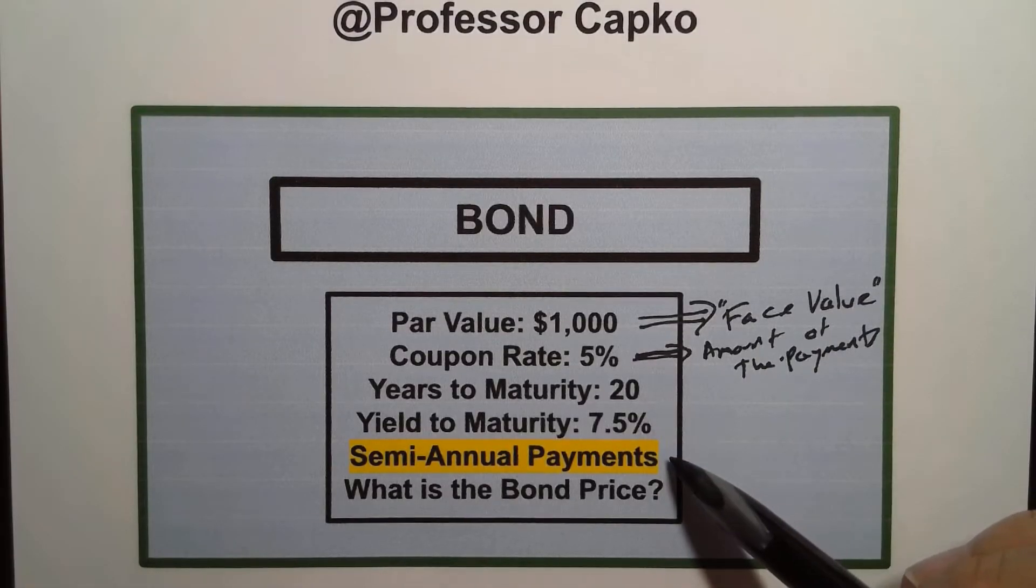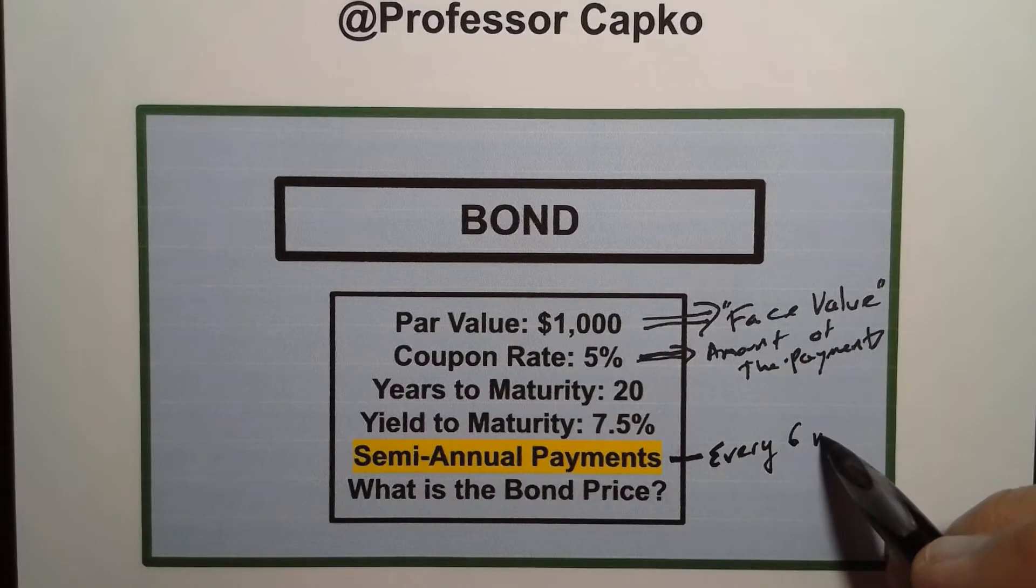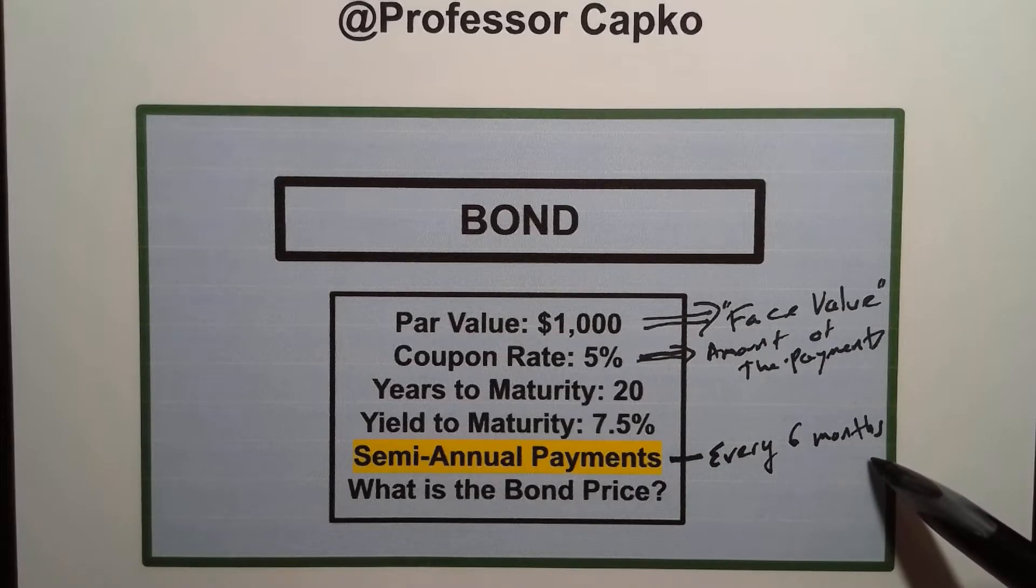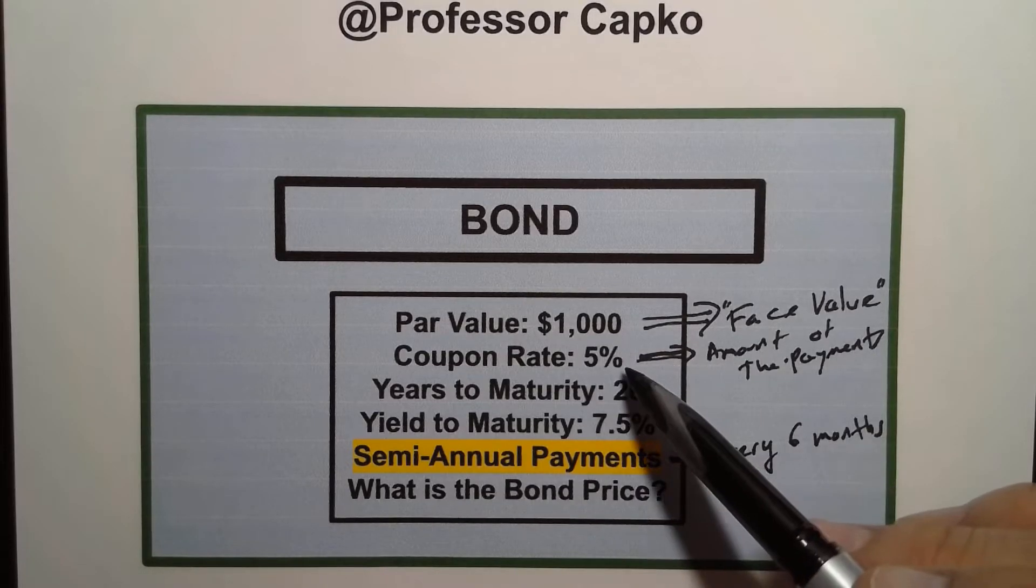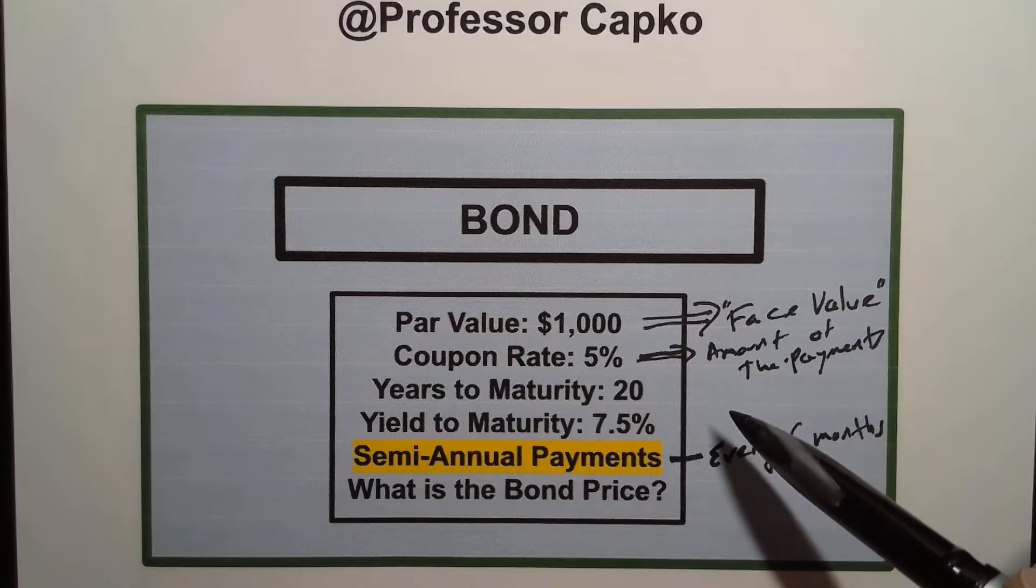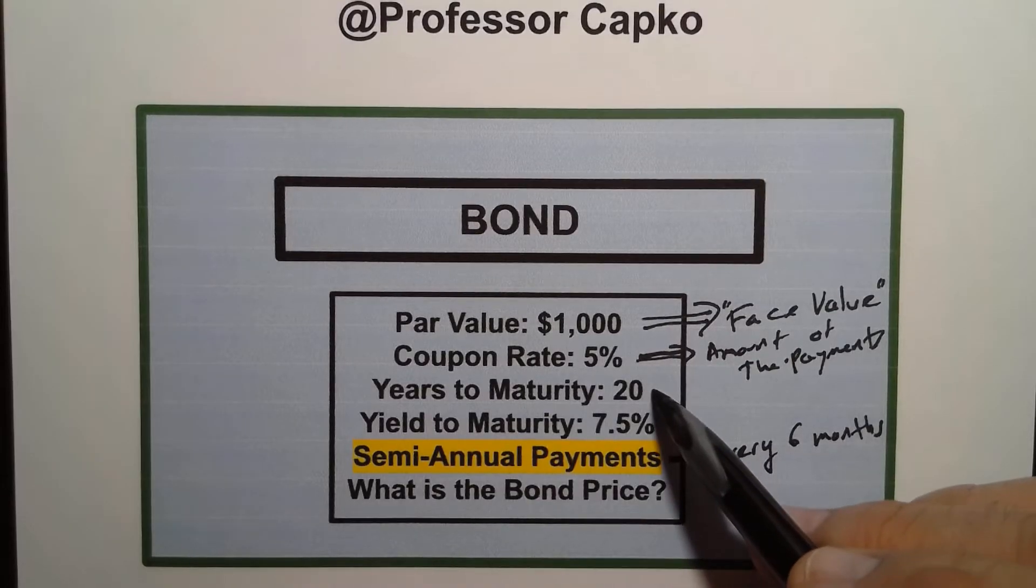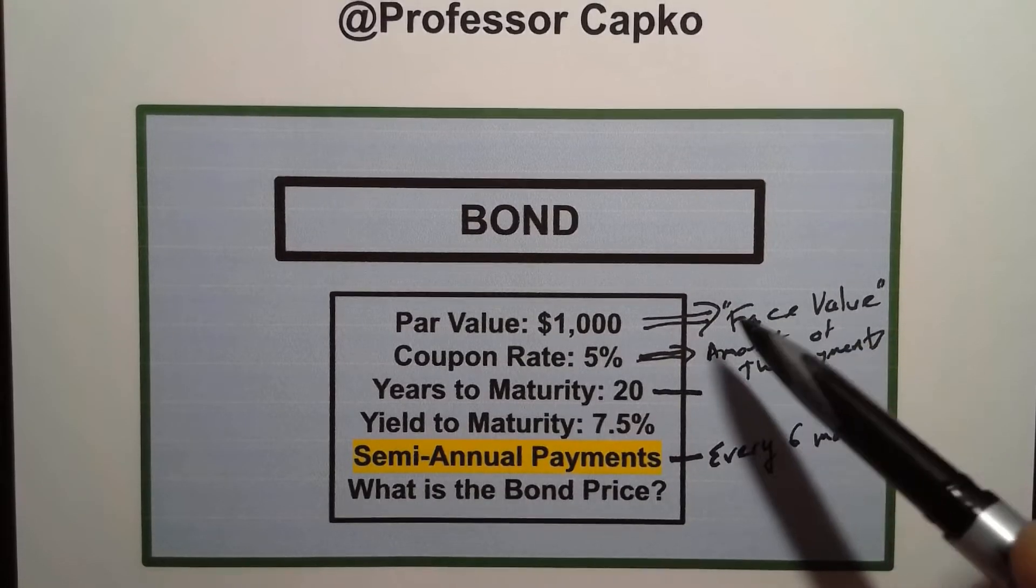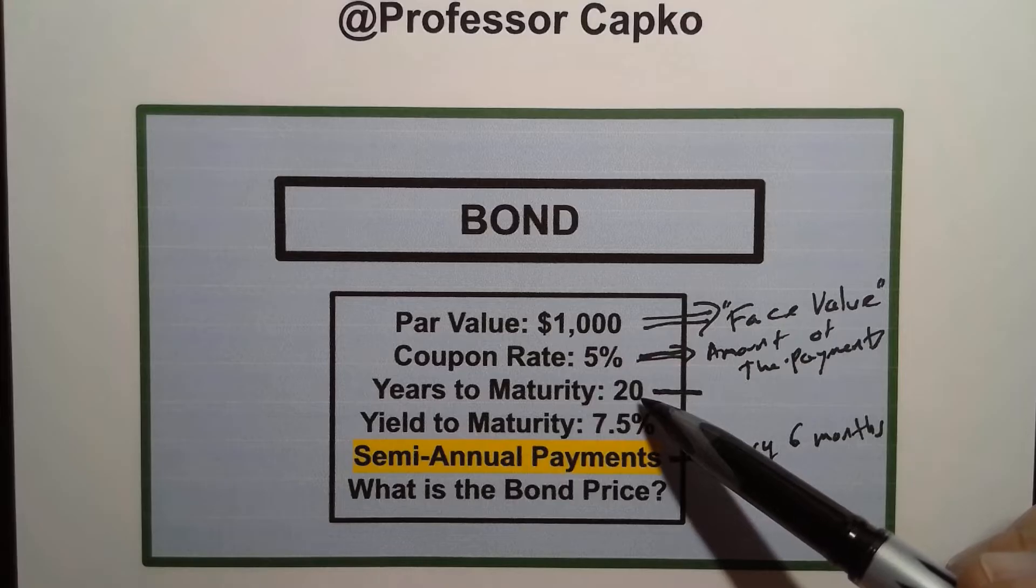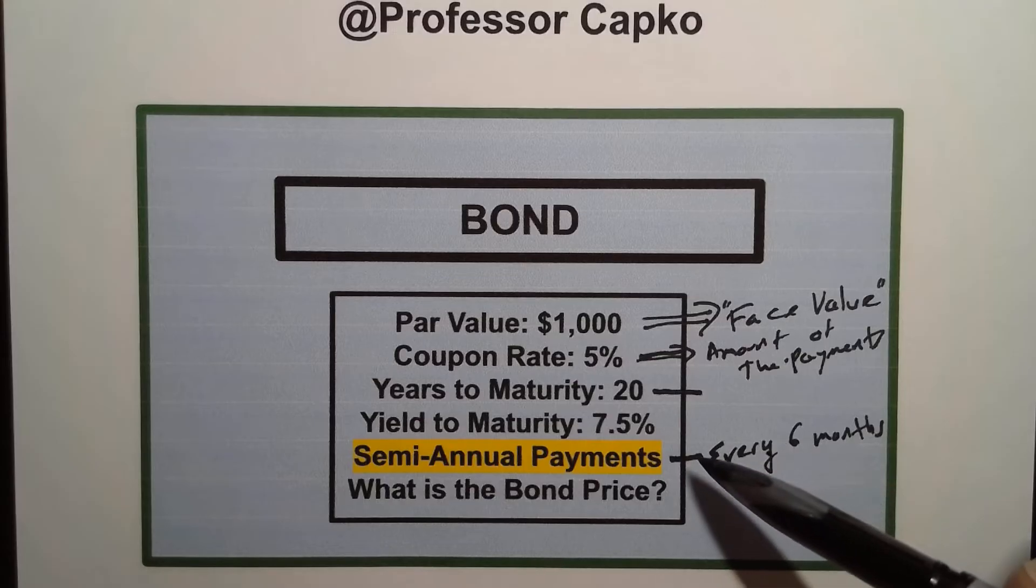In this case it is semi-annual payments that means every six months. Semi-annual would mean that every six months you get a payment and those payments over the course of a year would equal five percent of the face value of the bond. So we're going to calculate that in a moment. Years to maturity is how long until the bond matures, when the bond finally pays off that face value. So in this case there's 20 years until that payment is due. The whole time every six months you'll be getting a semi-annual payment of interest.